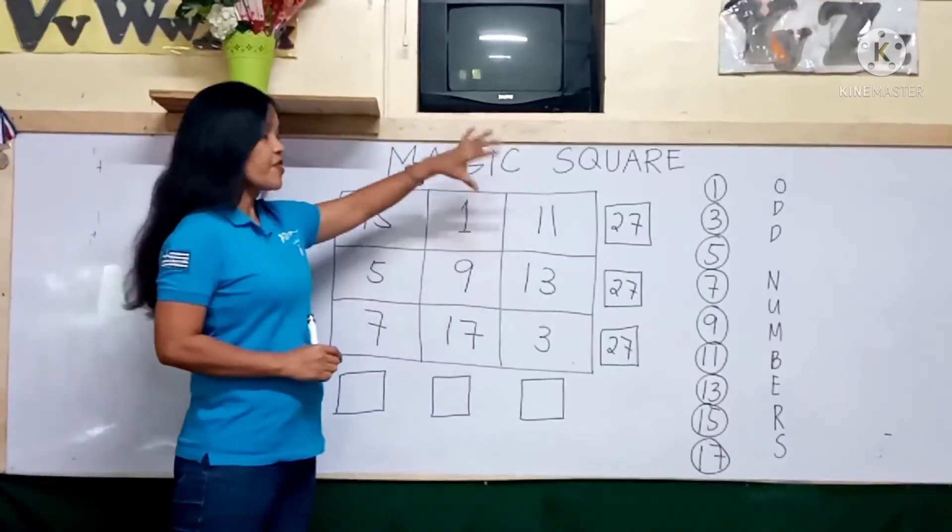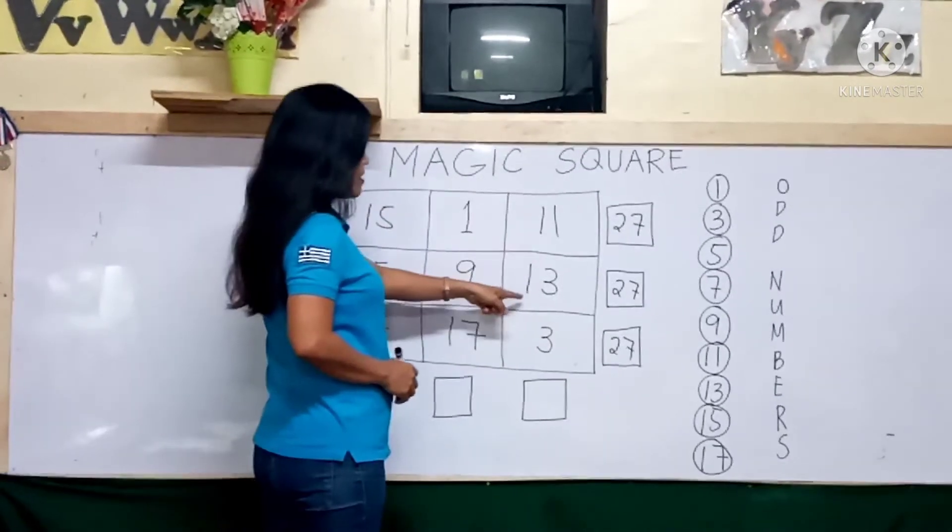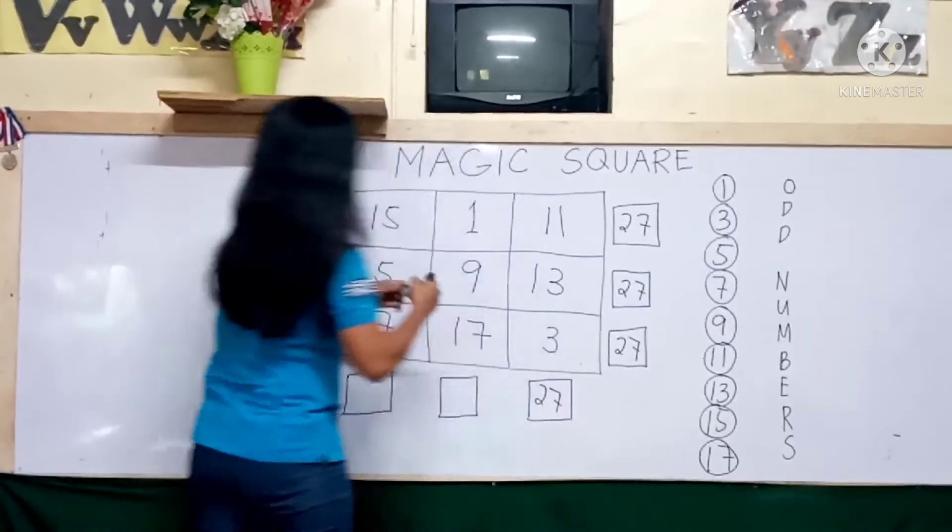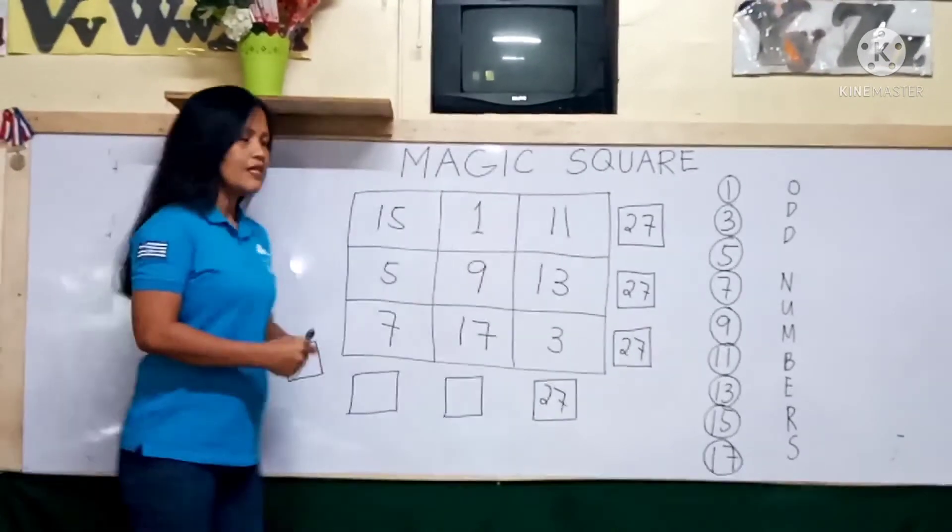How about the vertical sum? 11 plus 13 is 24, plus 3, 27. 1 plus 9, 10, plus 17, 27.